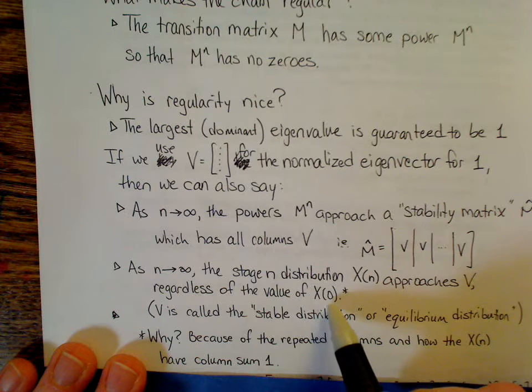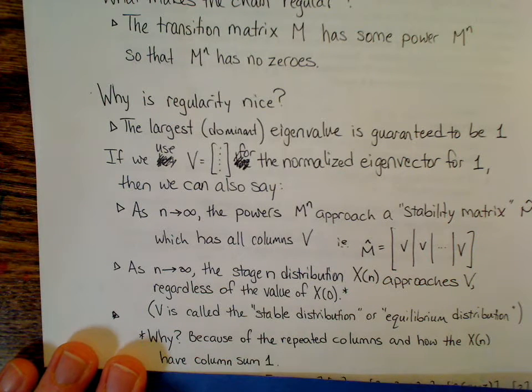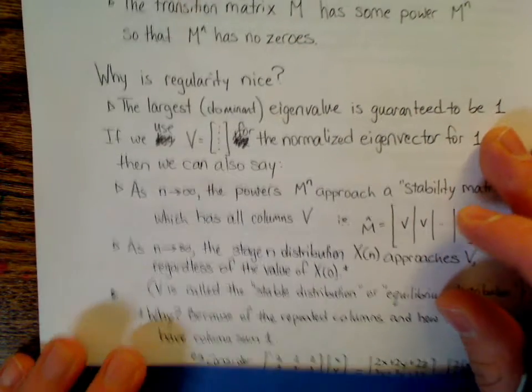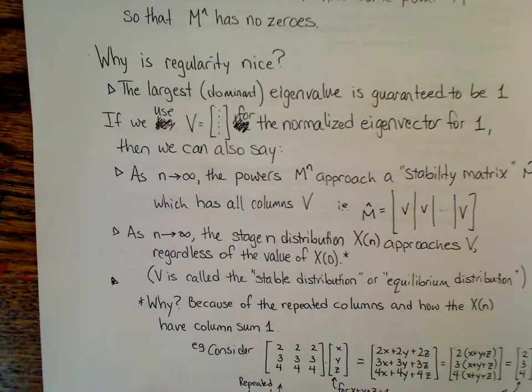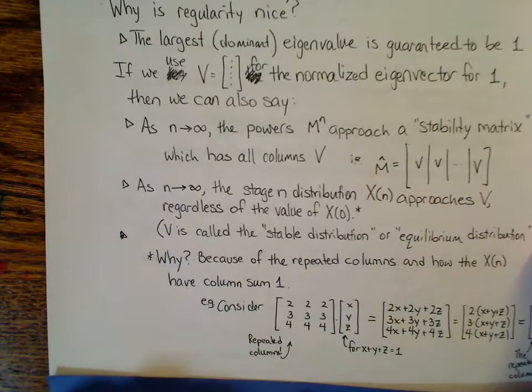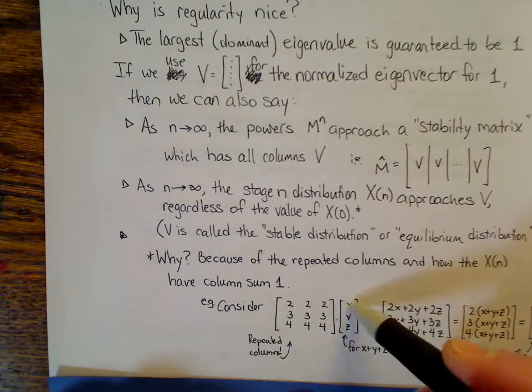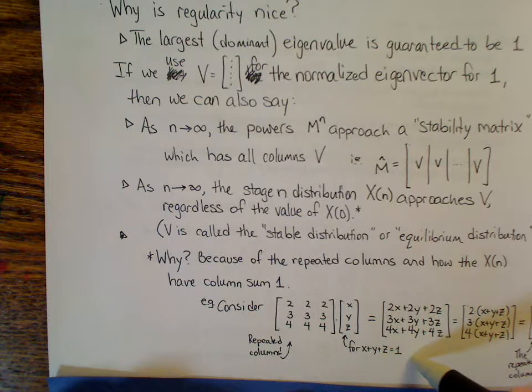And so v is called the stable distribution or the equilibrium distribution. It depends on the textbook. I thought I'd highlight why this should work out the way it does, and it has less to do with the eigenvector-ness of this, as much as it has to do with the repeatedness of the columns, along with how these x's are probability vectors, or they're vectors with column sum 1. So I just sort of threw out, just to show that the eigenvector, the normalized doesn't really matter, I'll repeat 2, 3, 1 here. So 2, 3, 1, 2, 3, 1, 2, 3, 1, times some vector that adds up to 1.